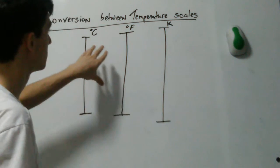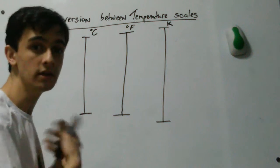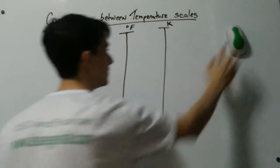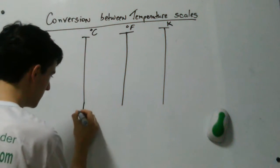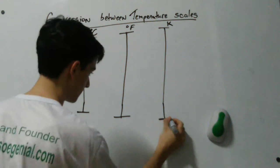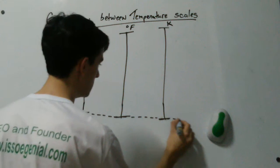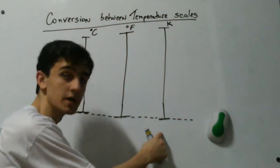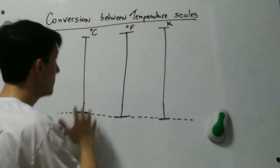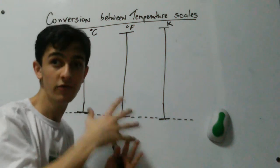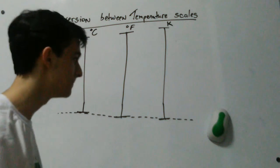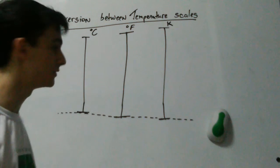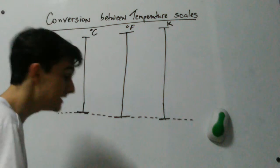We're going to have an equation which we can use to convert between the scales. Let's imagine this is the same temperature for all the scales. The three scales are going to use different numbers to represent the same temperature, but this is the same temperature. No matter which scale you are using, the velocity at which the particles are moving is the same. What changes is the number which you assign to the temperature, and that depends on which scale you are using.